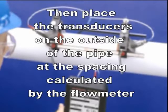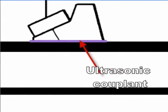We then place the transducers on the outside of the pipe, the spacing calculated by the flow meter. We also need to place an ultrasonic couplant between the transducers and the pipe because an air gap will stop the ultrasonic signal.